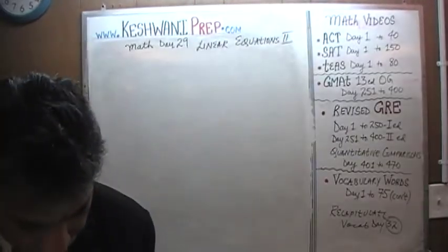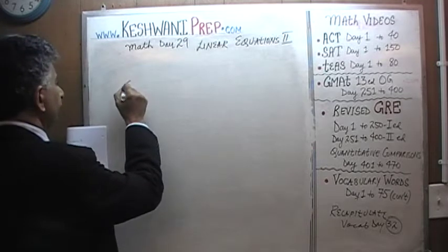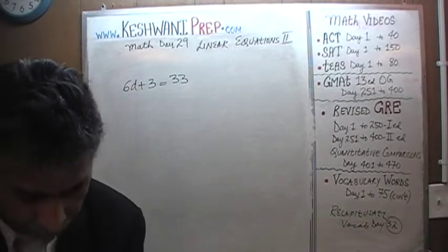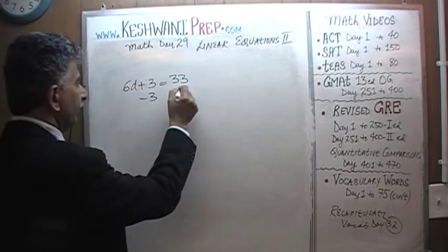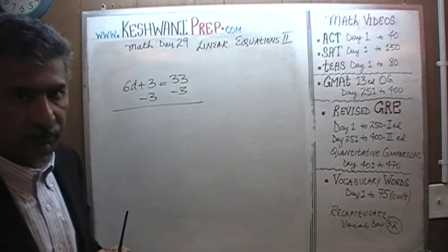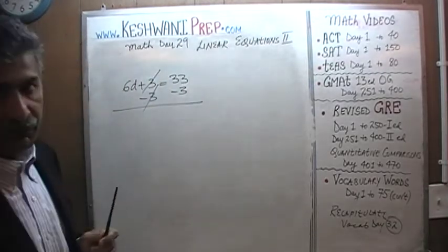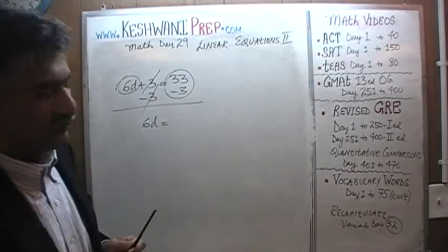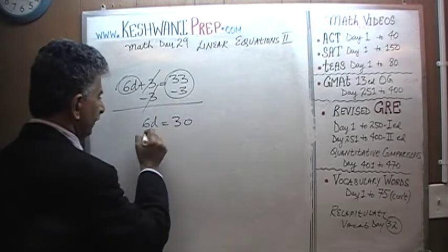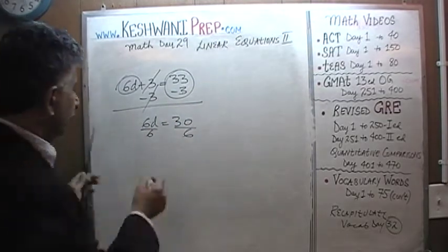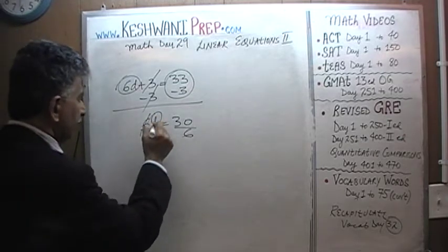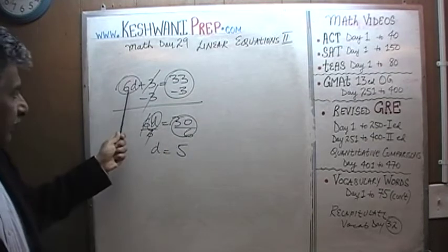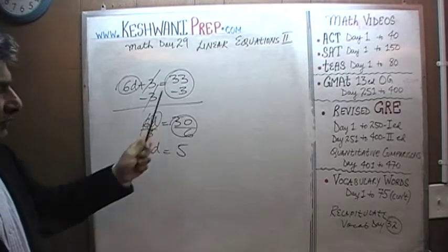Just one more. 6d plus 3 equals 33. Let's subtract 3 from both sides of the equation. Positive 3 cancels the negative 3. And we find that 6d equals 33 minus 3 which is 30. Divide both sides by 6 so that we can eliminate this 6. And now d equals 30 divided by 6 which is 5. We put it back in the equation to verify it. 6 times 5 is 30. 30 plus 3 is 33, which is exactly what we have here.